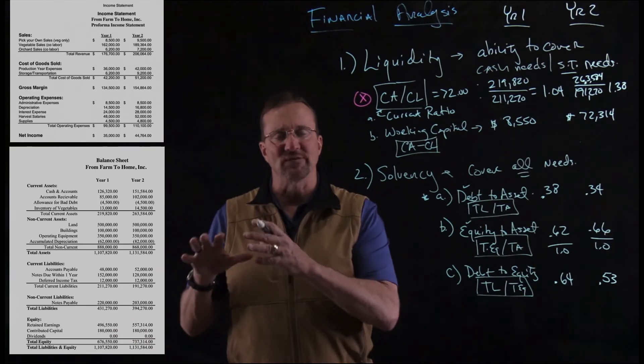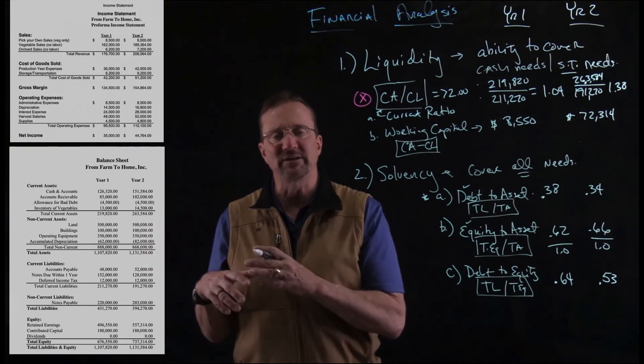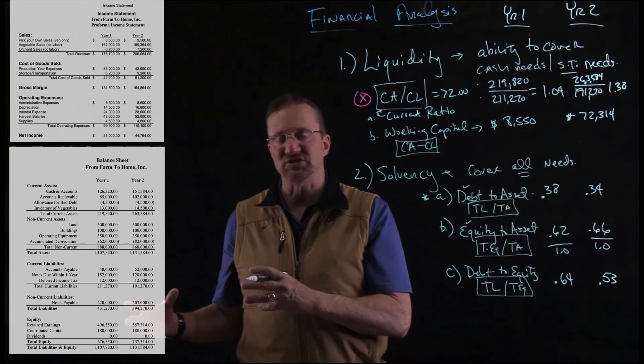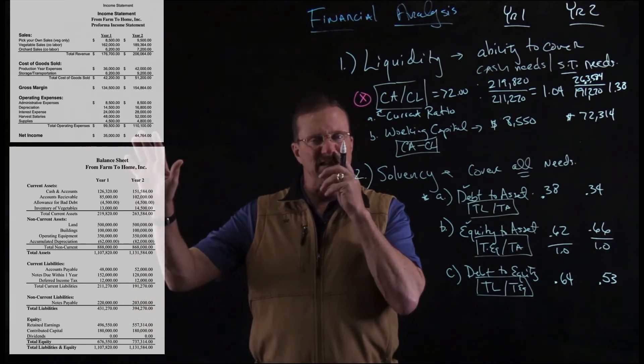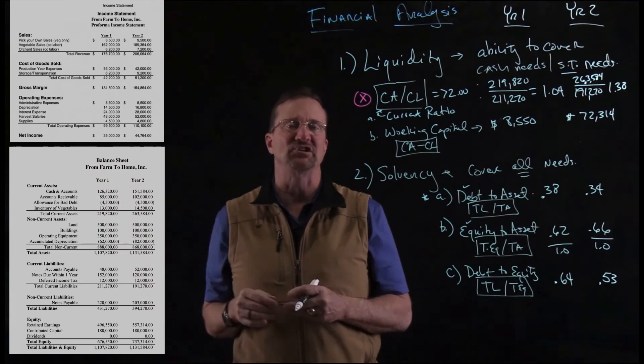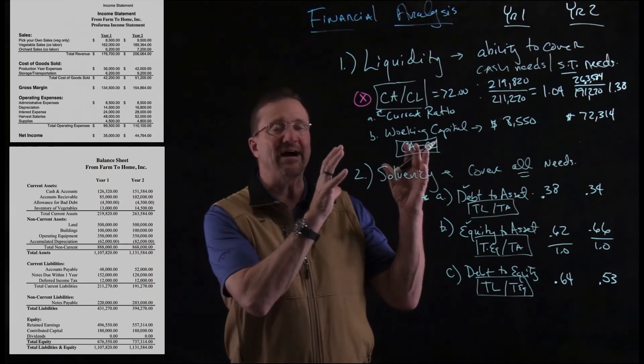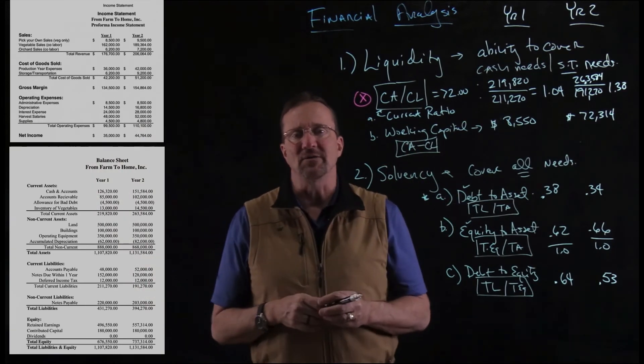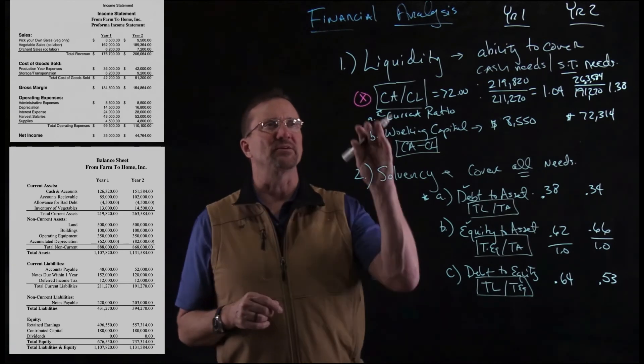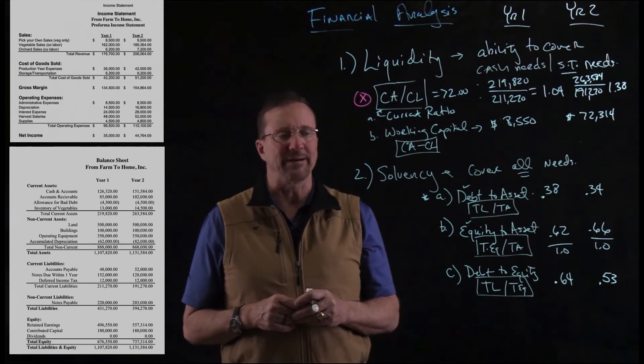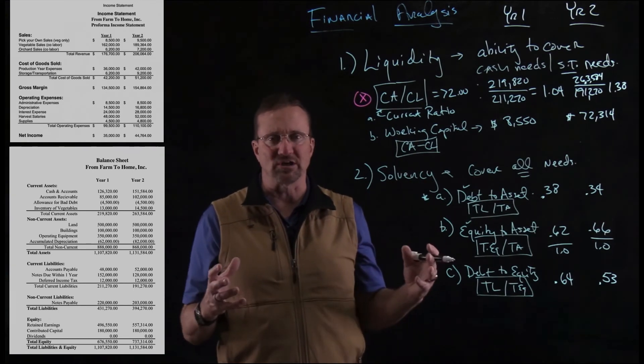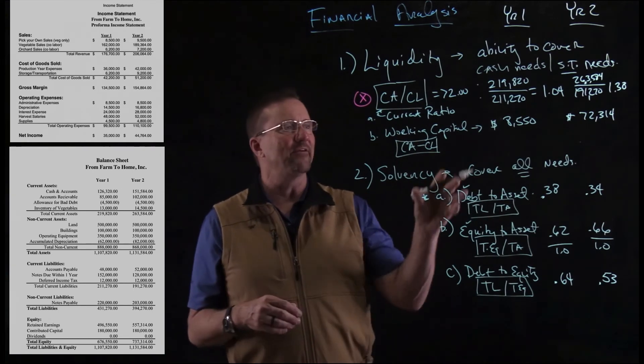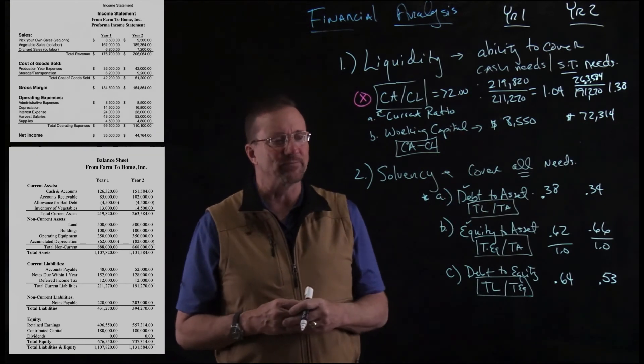But you can't just observe total liabilities. You can't just observe total assets. You can't even just observe total equity. You can't even really just look at profit in each year. By putting those values into these formulas, you actually can get a clearer picture of some of the financial areas. And we're talking about today, liquidity means short-term debt, solvency, longer-term asset and debt. And then we put those ratios together and kind of get some pictures.